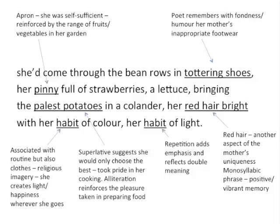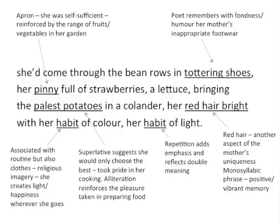In this last section, 'she'd come through the bean rows in tottering shoes' — that phrase 'tottering shoes' seems to be the poet remembering with fondness, or almost with humour, her mother's inappropriate footwear, as tottering shoes aren't really the type of thing you would wear for gardening. She wore a pinny — a type of apron — showing that she was self-sufficient. That idea is reinforced by the huge range of fruits and vegetables in her garden: strawberries, lettuce, potatoes. The superlative 'the palest potatoes', with its alliteration, reinforces the pleasure in preparing food and suggests the mother would only choose the very best. And the fact that the daughter picks out her red hair — 'her red hair bright', which is monosyllabic — places emphasis on each word, emphasising a very positive, vivid and vibrant memory.